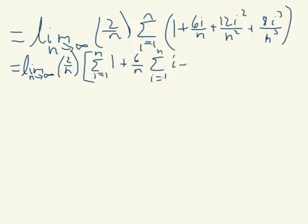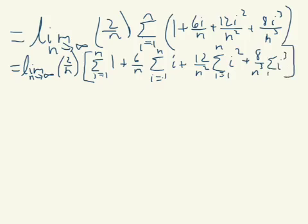With an i squared left, and then last we put 8 over n cubed out front with the i cubed at the end. i equals 1 to n. Okay, so we're going to use all four of our formulas. Let's copy this down again.